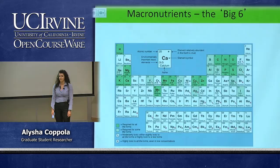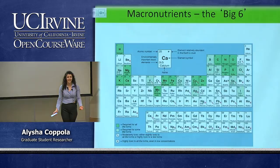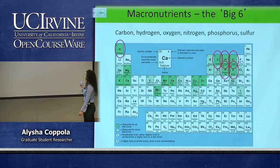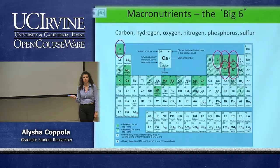Carbon is very important — we'll be talking about that today. Nitrogen, oxygen, phosphorus, sulfur, and hydrogen are the big six. Those are the ones we're mostly concerned about.